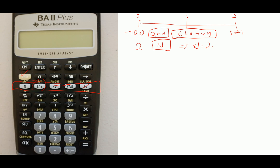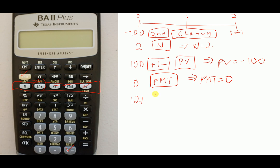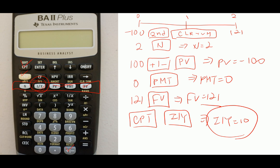PV is negative 100, so you put 100 first, then change the sign using this key and press PV. Then you have PV equals negative 100. PMT is zero, so just zero PMT for this chapter. Future value is 121, so press 121 and press future value. Then you have FV equals 121. Now compute CPT, press the variable we want to know, I over Y interest rate. You should have I over Y equal to 10.